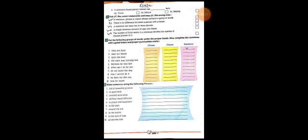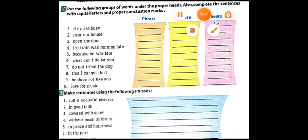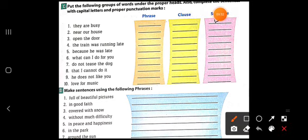Then, statements hai, jinhe aapko padhkar true and false mein batana hai. Then, aapko kuch ek exercises diya hua hai. Un sentences ko aapko phrase, clause and sentence. Wo kya hai yeh batana hai? Jaise, they are busy. Here is a sentence. They are busy. It's giving us a complete meaning. So, it is a sentence. Near our house. It's giving incomplete sense. So, it is the phrase. Open the door. Yeh pura aapko meaning dega hai. So, this is a sentence. The train was running late. Yeh bhi aapko complete idea de raha hai. Because he was late. Now, you can see ki yeh ek clause hai. Jo kisi aage ka sentence. Jo hai, wo kuch aur hoga. So, this is the dependent clause.